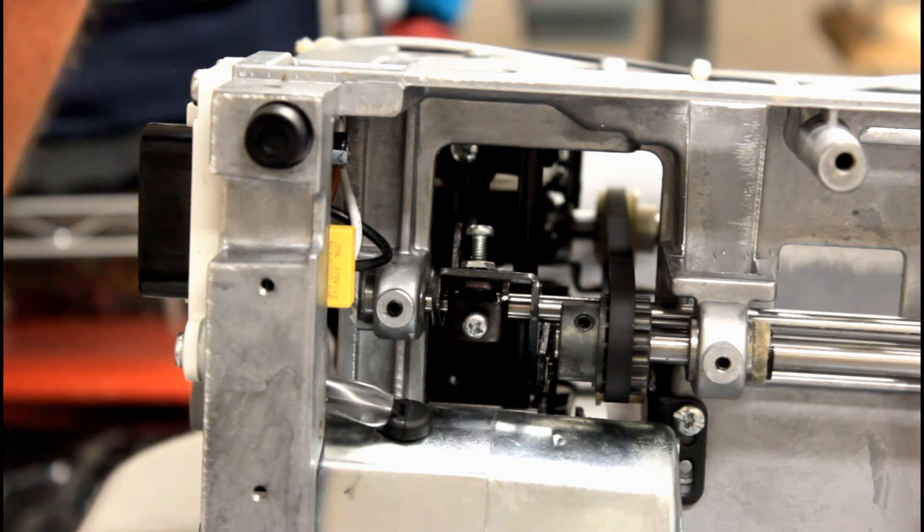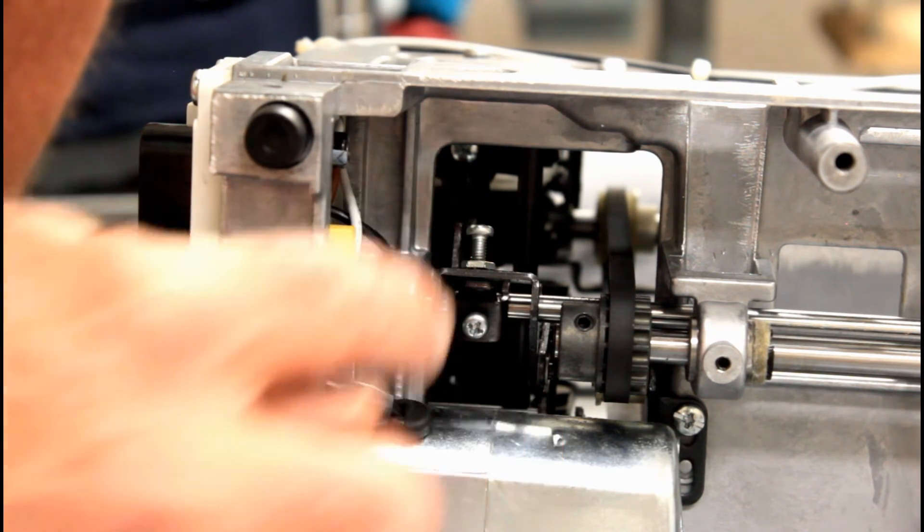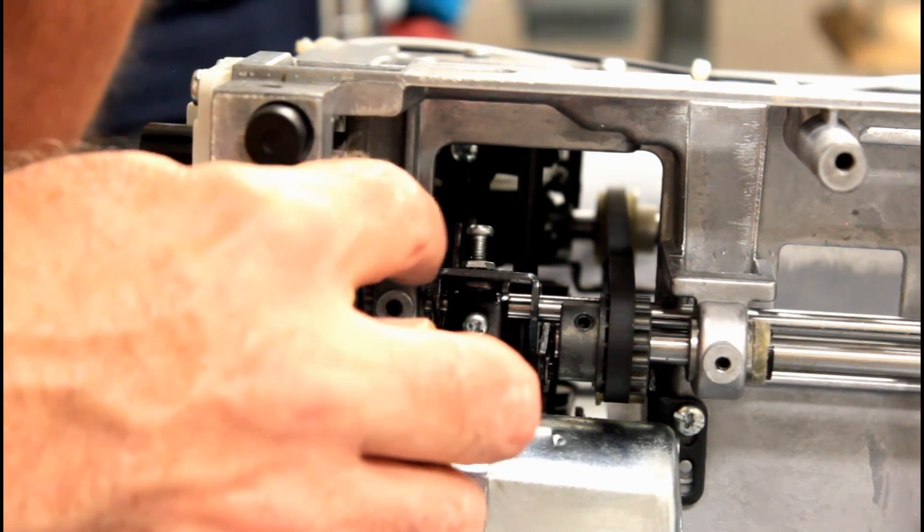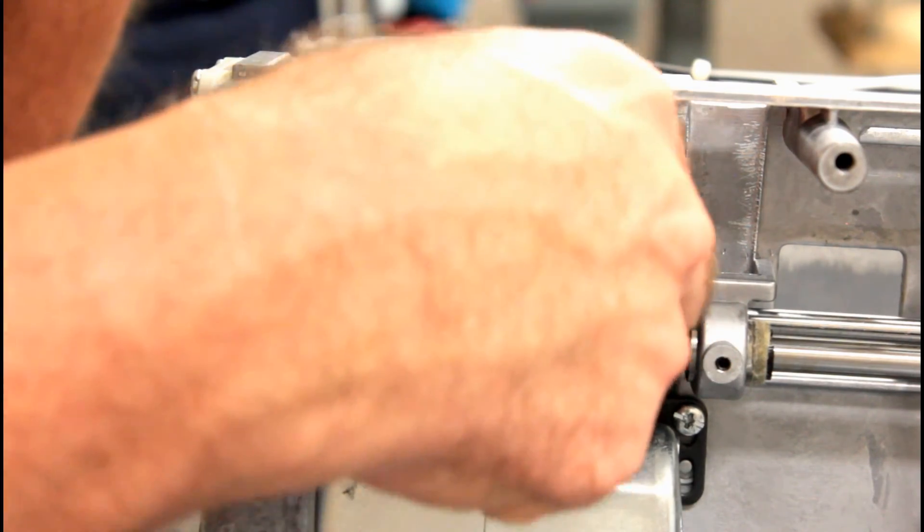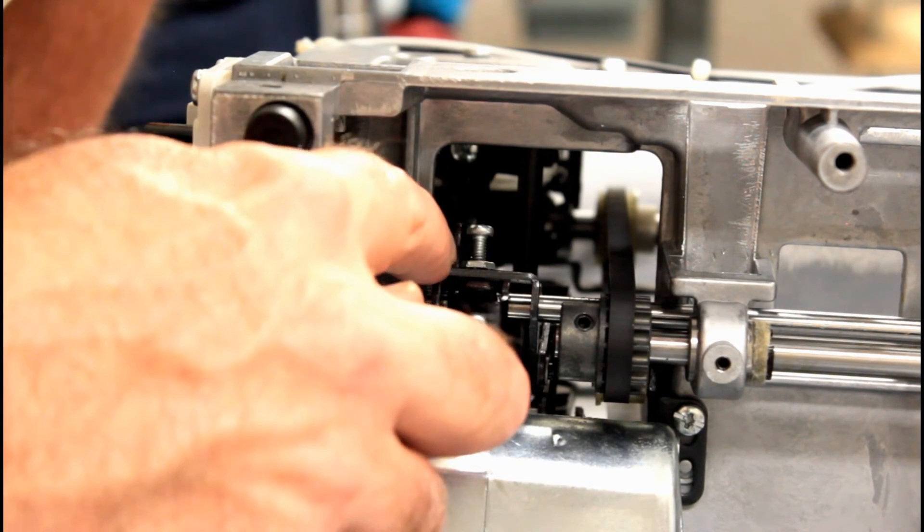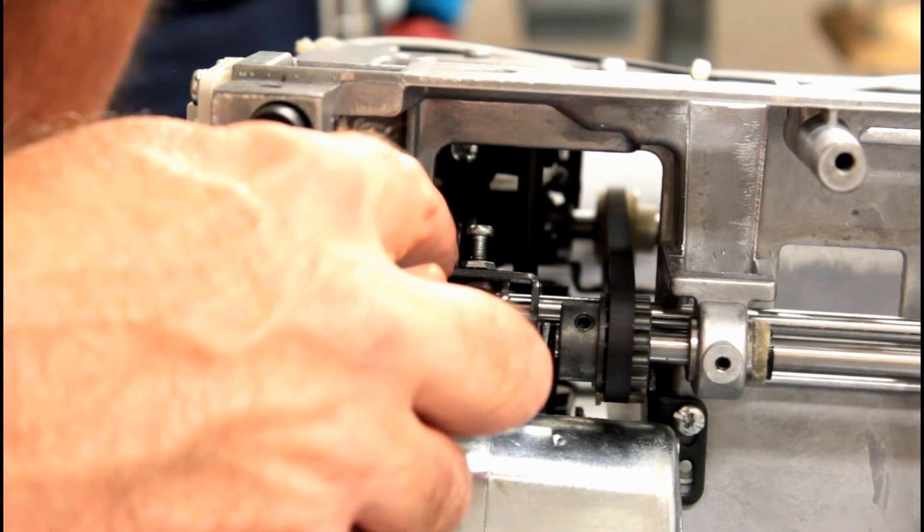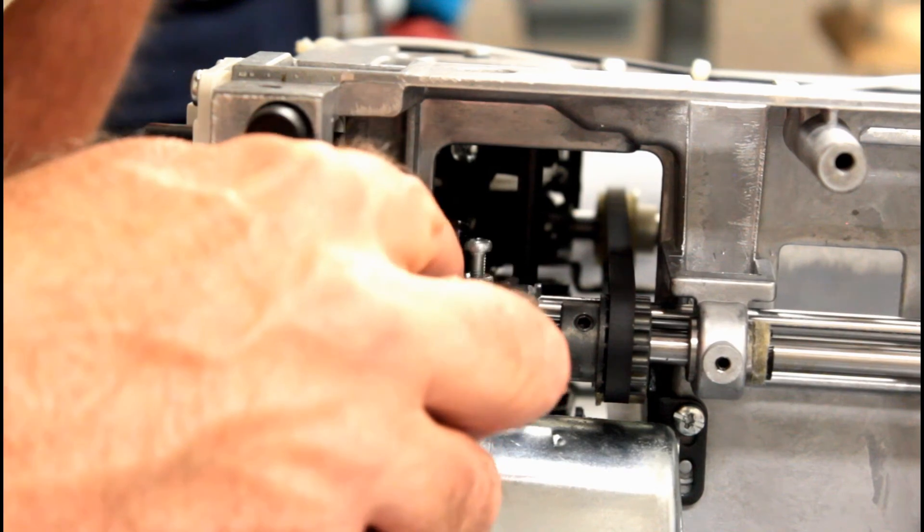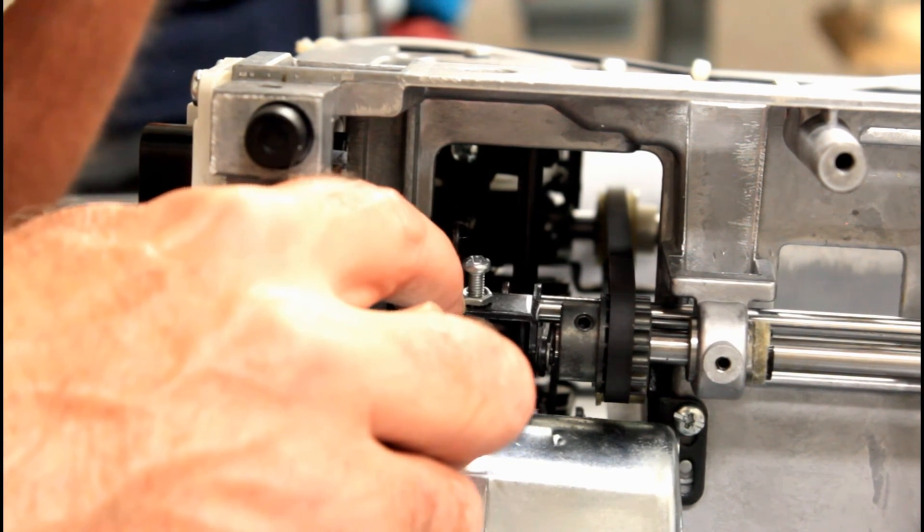So anyway, go ahead and do that and give it a try and let me know if it works. But that's the screw right there that you want to loosen and tighten. And it's got a lock nut or lock screw on it to lock it down once you get it to the length you need. So you may want to take a wrench and tighten this up just a little bit to make sure it stays in place.